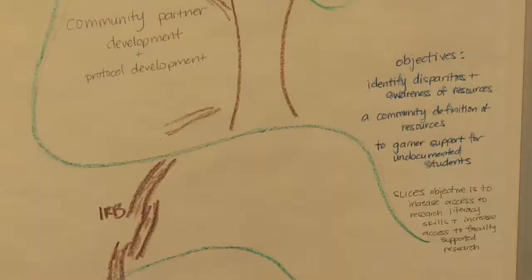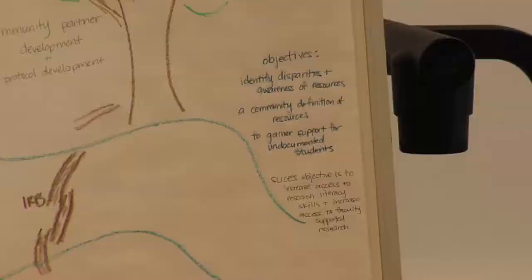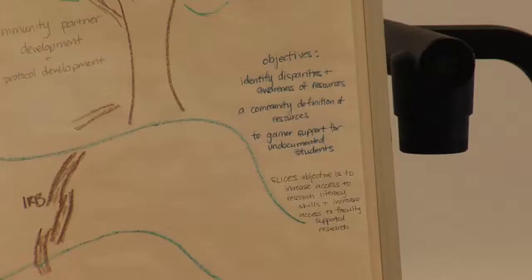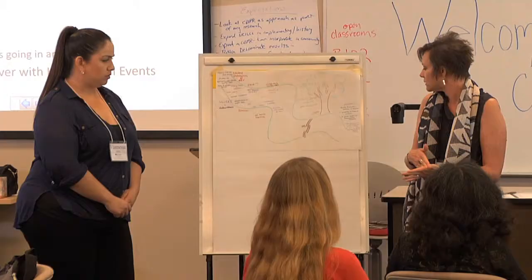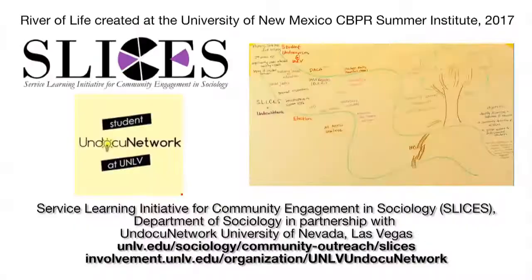The really important piece is the objectives. What the students want is for us to help them identify the disparities in awareness — students see barriers to resources, but what do faculty and staff see? They want a community-based definition of resources on campus, and for us to garner support for undocumented students as a whole. SLICE's objective is to help increase access to research, increase research skills, and increase undergraduate student access to faculty doing research in topics that really matter to them.